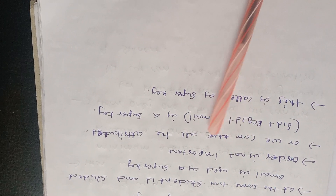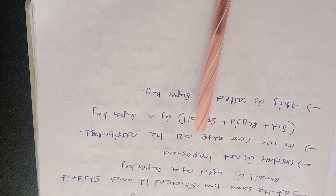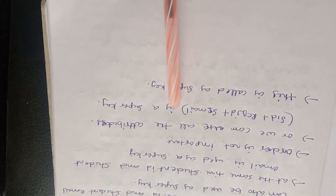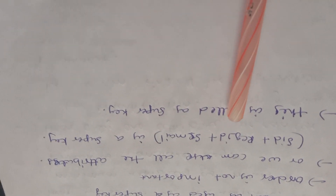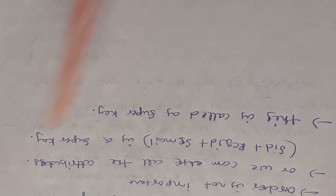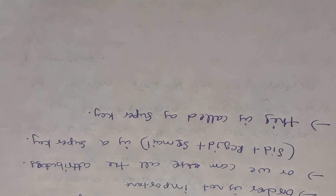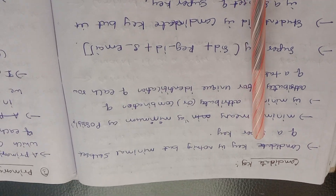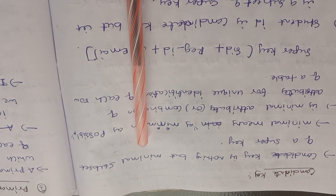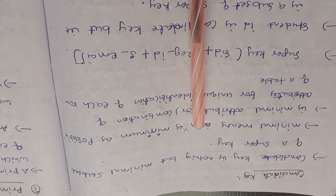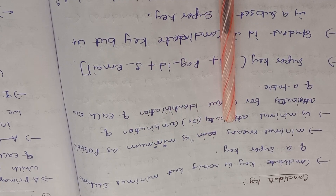Order is not important when forming a super key. Any combination of attributes that can uniquely identify a row is a super key. Next: candidate key. A candidate key is nothing but a minimal subset of a super key.